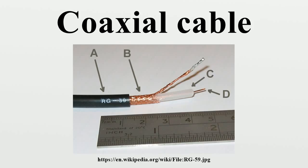Coaxial cable conducts electrical signal using an inner conductor surrounded by an insulating layer and all enclosed by a shield, typically one to four layers of woven metallic braid and metallic tape. The cable is protected by an outer insulating jacket.